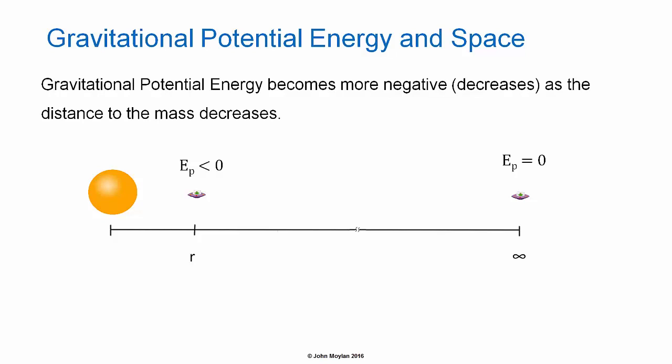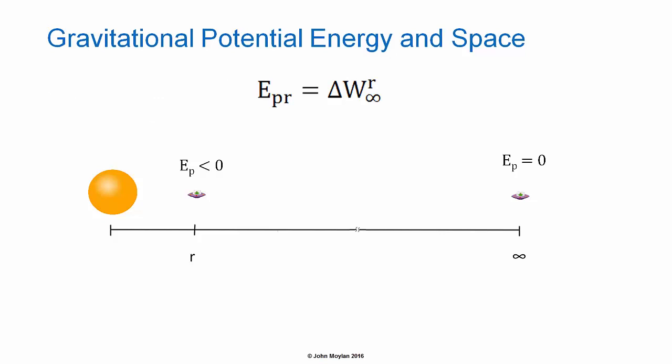Gravitational Potential Energy becomes more negative, decreases, as the distance to the center of mass decreases. So as the distance between the center of mass of the star and the center of mass of the little spaceship decreases, the Gravitational Potential Energy also decreases or becomes more negative. This is similar to the situation of the box on Earth, because as you lift the box higher the Gravitational Potential Energy increases, and as you lower the box towards the surface of the Earth, the Gravitational Potential Energy decreases. The Gravitational Potential Energy of the little spaceship at a distance r from the center of mass of the Sun, as shown in the diagram, is going to be equal to the work done to move our little spaceship from infinity into a distance r.